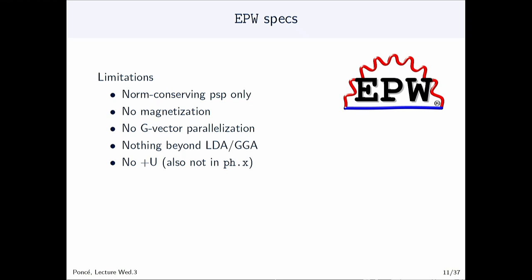However, EPW still has some limitations: it can only deal with norm-conserving pseudopotentials — ultrasoft is not yet implemented. It cannot deal with magnetization. At the moment there is no G-vector parallelization, only K-point parallelization. In terms of exchange-correlation functionals, only LDA and GGA are available; more advanced functionals and DFT+U are not implemented, and DFT+U is also not in the phonon code public version.